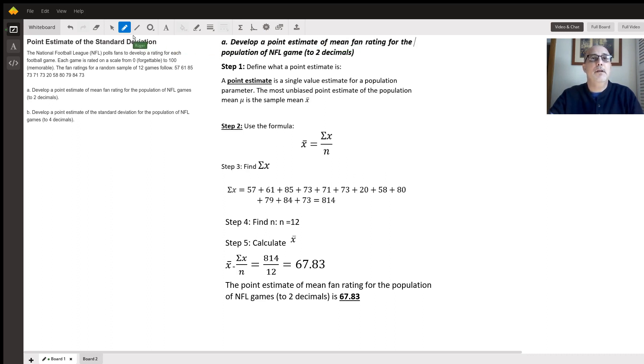First thing we're going to do is look at what is given. It says the NFL poll stands to develop a rating for each football game. Each game is rated on a scale from zero, forgettable, to one hundred, memorable. The fan rating for a random sample of 12 games follows, and right there is the data.